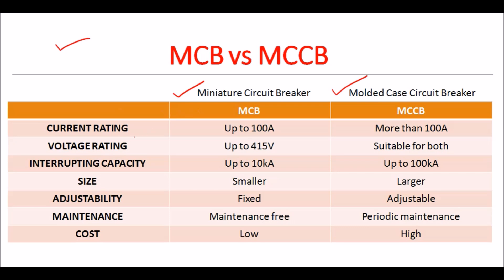Current rating: MCB is typically used for lower current ratings, up to 100 amperes. MCCB is used for higher current ratings, ranging from 100 amperes to several thousand amperes.